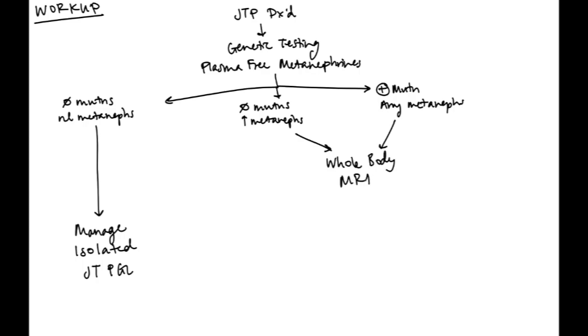For either of the other two outcomes, we recommend a whole body MRI. This is because less than 1% of jugulotympanic paragangliomas are secreting. And so if there's elevated metanephrines in the plasma, it's probably coming from something else and you need to find the other primary in the whole body MRI. Similarly, if they have a positive mutation, the likelihood of them having multiple primary paragangliomas increases dramatically. And so that also warrants a whole body MRI. If there are no other tumors, you can manage the isolated jugulotympanic paraganglioma again. If there are other tumors, then of course multidisciplinary management.